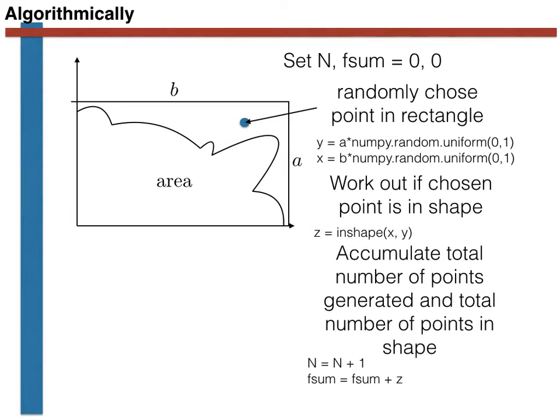The code then proceeds by incrementing the two variables that were set equal to zero at the start. The variable n here counts the number of random variables that have been generated, so it is increased by one. The variable fsum, by contrast, counts the number of times that the points generated were underneath the curve. z is therefore added to this quantity.